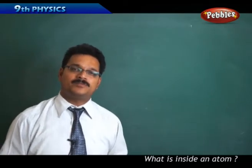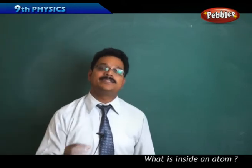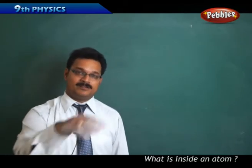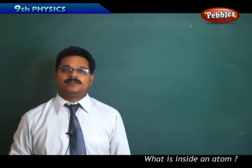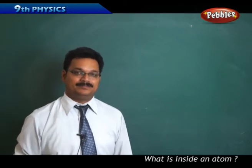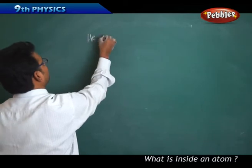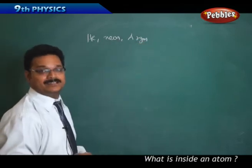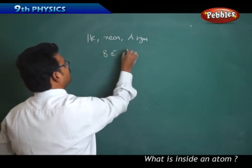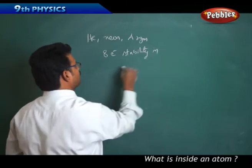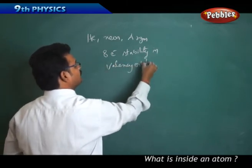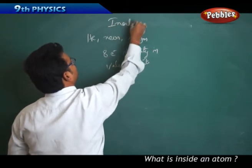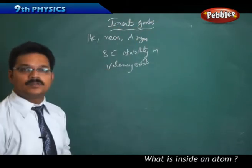As per valency, an atom wants to get stability. If it is unstable, it wants to go to a stable state by filling its orbit with the specified number of electrons — always 8. Atoms like helium, neon, and argon are in a gaseous state and they already have eight electrons in their valency orbits, which are the outermost orbits.